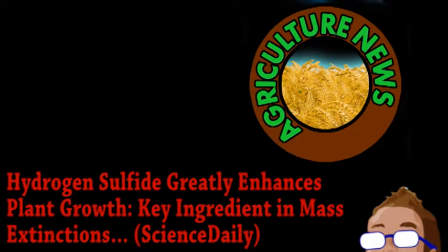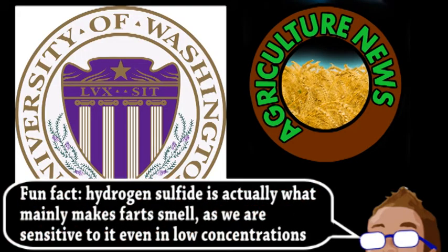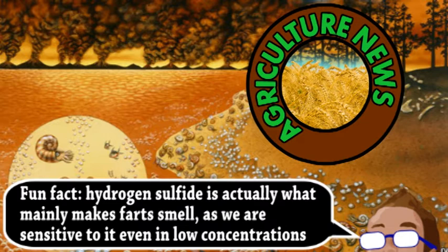We begin with some interesting news from the world of agriculture. Researchers at the University of Washington have made some surprising discoveries involving the gas hydrogen sulfide. In case you didn't know, hydrogen sulfide is an extremely toxic substance that pretty much kills anything that doesn't actually produce the stuff. It's also likely responsible for a mass extinction event that happened about 250 million years ago and killed 75% of everything.